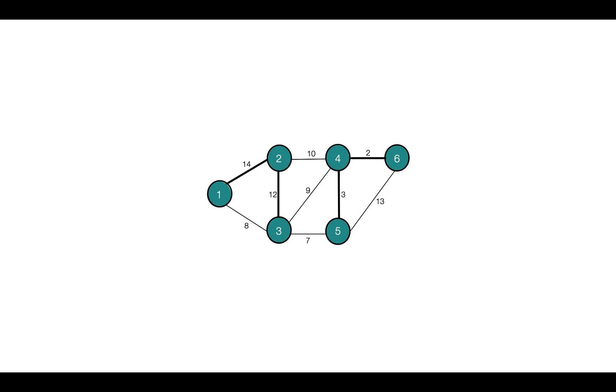Is this a spanning tree? No. Again, it's not a spanning tree because it's not connected. There are two components, one having 1, 2, and 3 and the other having 4, 5, and 6. And these two components are not connected. That's why it's not a spanning tree.